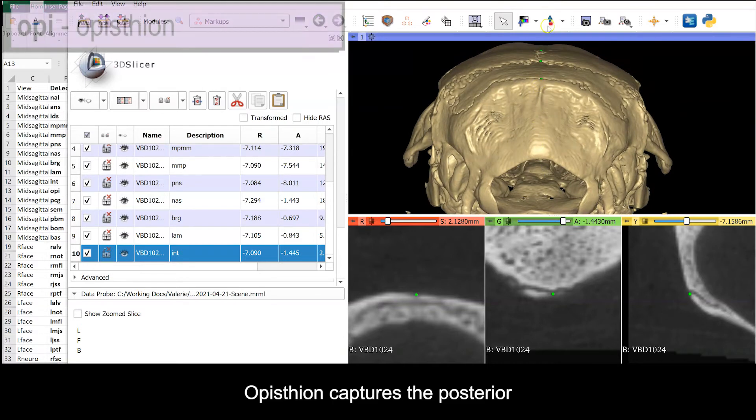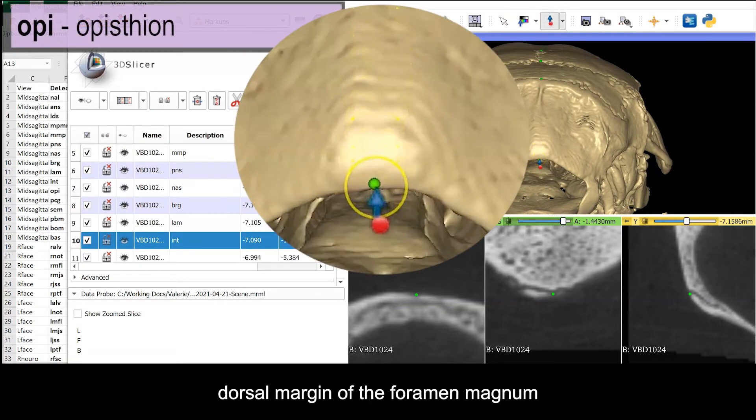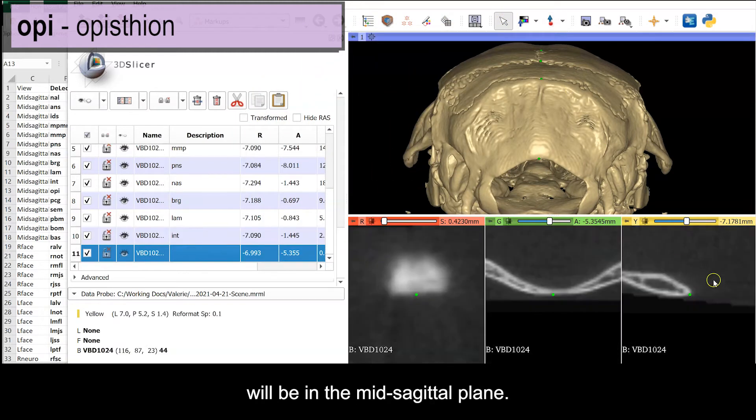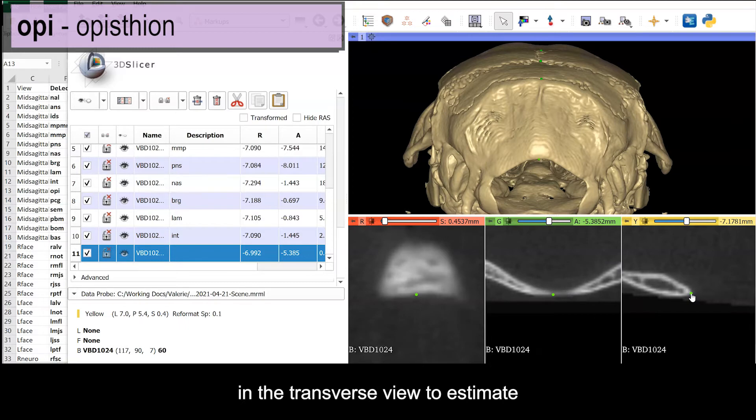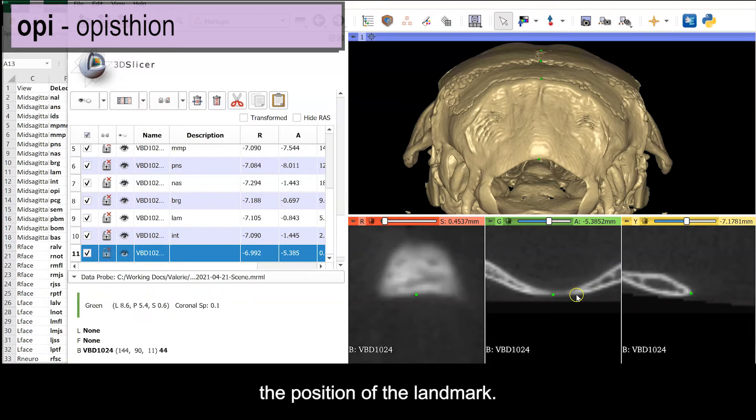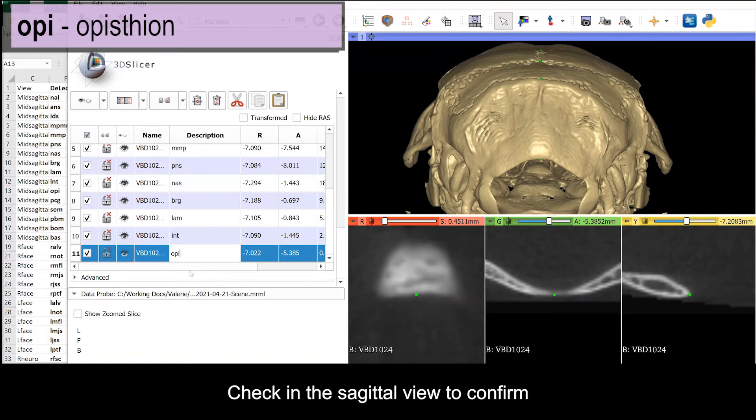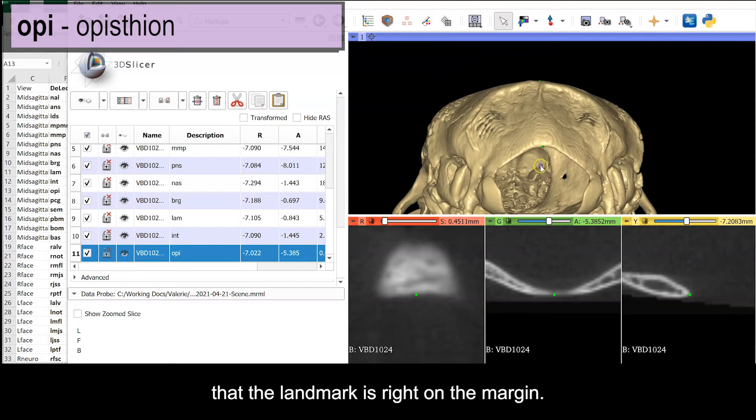Opisthion captures the posterior dorsal margin of the foramen magnum with an expectation that it will be in the mid-sagittal plane. You can use this radiolucent gap in the transverse view to estimate the position of the landmark. I also used the nuchal lines to help me find the midline. Check in the sagittal view to confirm that the landmark is right on the margin.